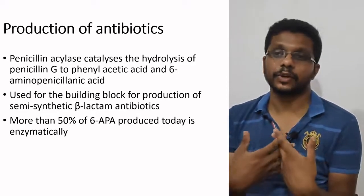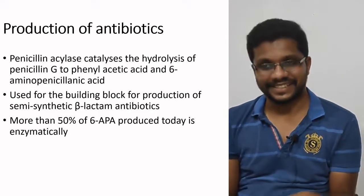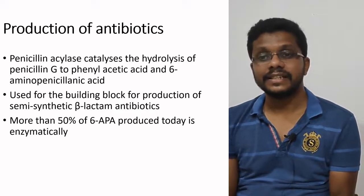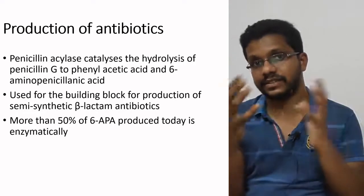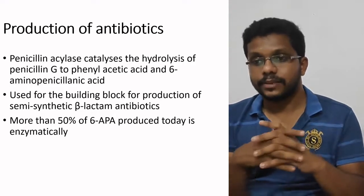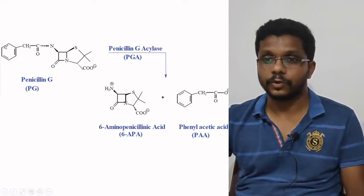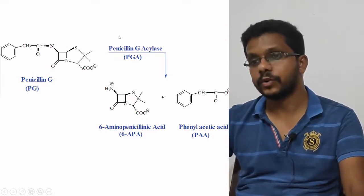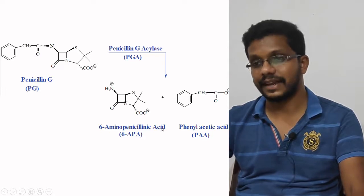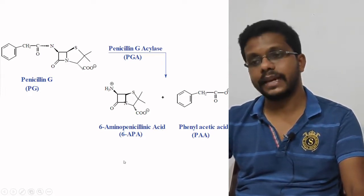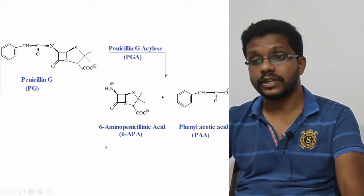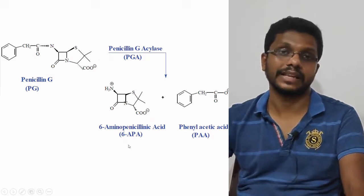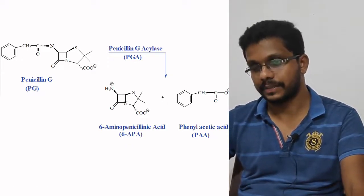One classical example of semi-synthetic antibiotic production is penicillin. For the production of semi-synthetic penicillin, we need 6-aminopenicillanic acid, which contains the beta-lactam ring and is used as a substrate. It is produced by an enzyme called penicillin G-acylase. We use immobilized penicillin G-acylase to convert penicillin G into 6-aminopenicillanic acid. About 50% of 6-aminopenicillanic acid is produced by this enzymatic conversion using immobilized enzymes.